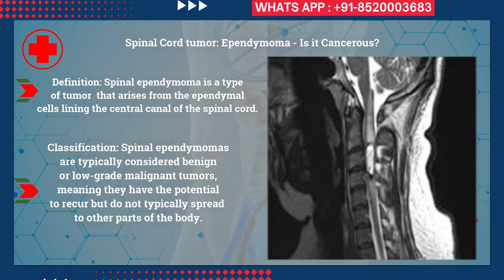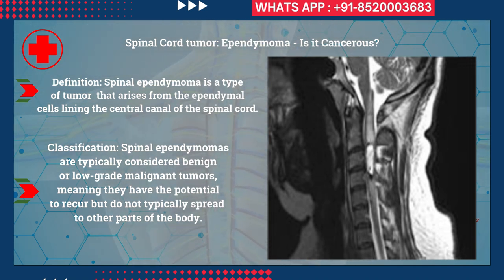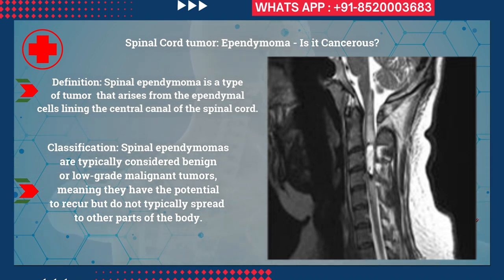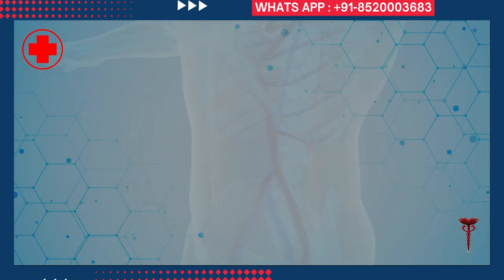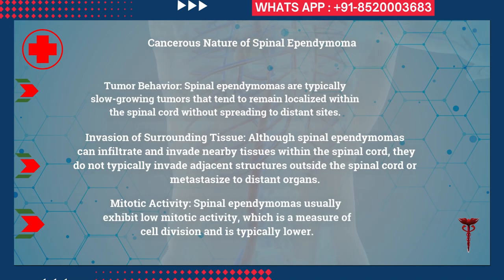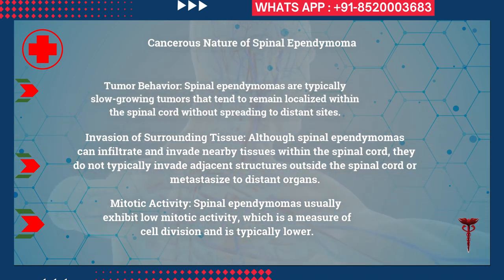Spinal ependymomas arise from the ependymal cells lining the central canal of the spinal cord. They are typically considered benign or low-grade malignant tumors — this is good news. In the majority of cases, they are low-grade malignant or benign, and they are typically slow-growing tumors.